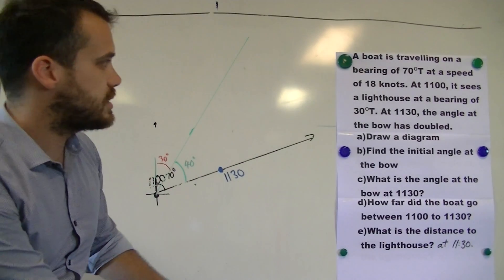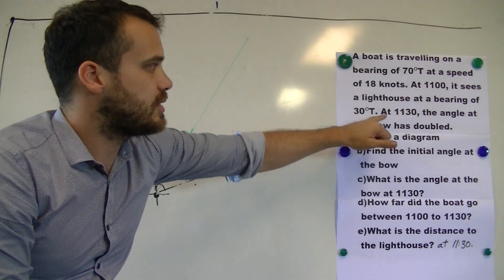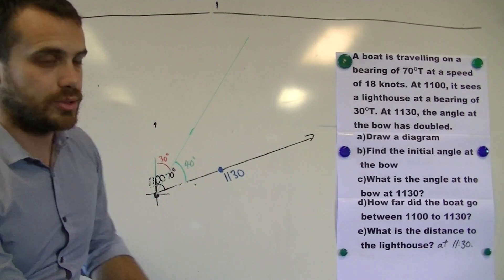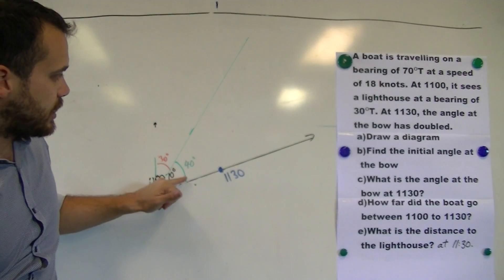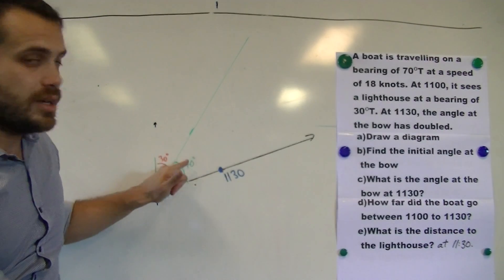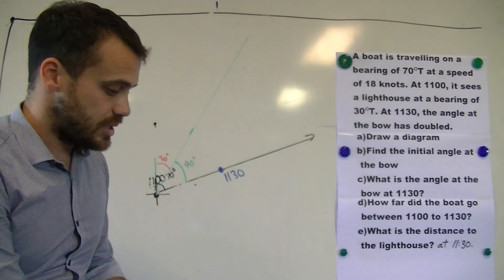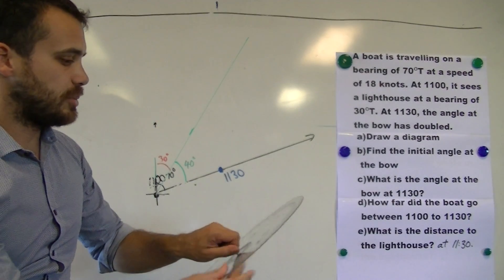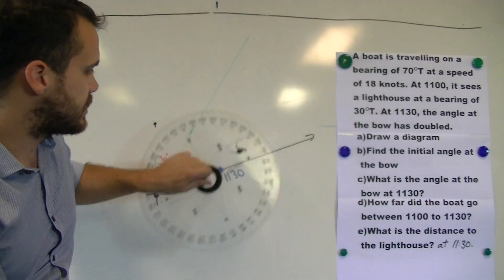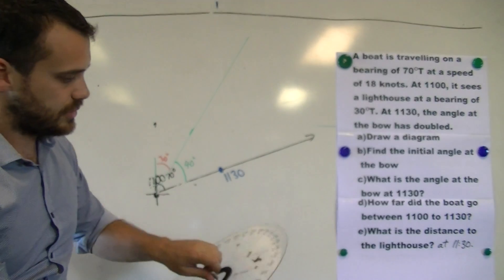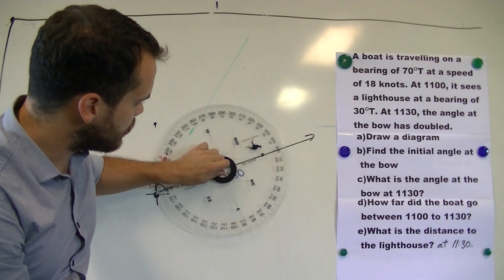Now it says, at 11:30 the angle at the bow has doubled. Now you can see the angle at the bow initially was 40 degrees. So that means that at 11:30 our angle at the bow will have doubled to 80 degrees. So let's take a look at what that looks like.